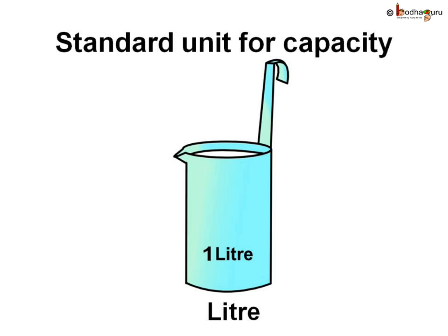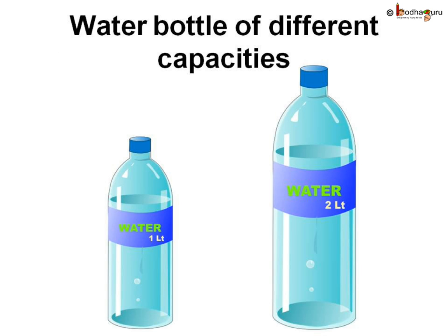You know, the standard unit of capacity is litre. There is a one litre container available to measure one litre of liquid like milk, water, or oil. The short form of litre is LT, so we write one litre as 1LT. When we go for an outing, we buy bottles of filtered water which are available in 1 litre, 2 litres, and also in greater capacity.